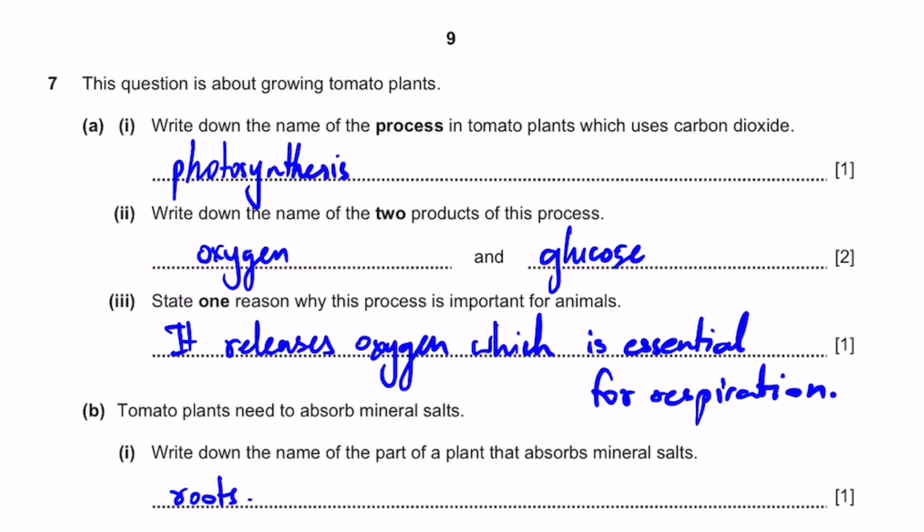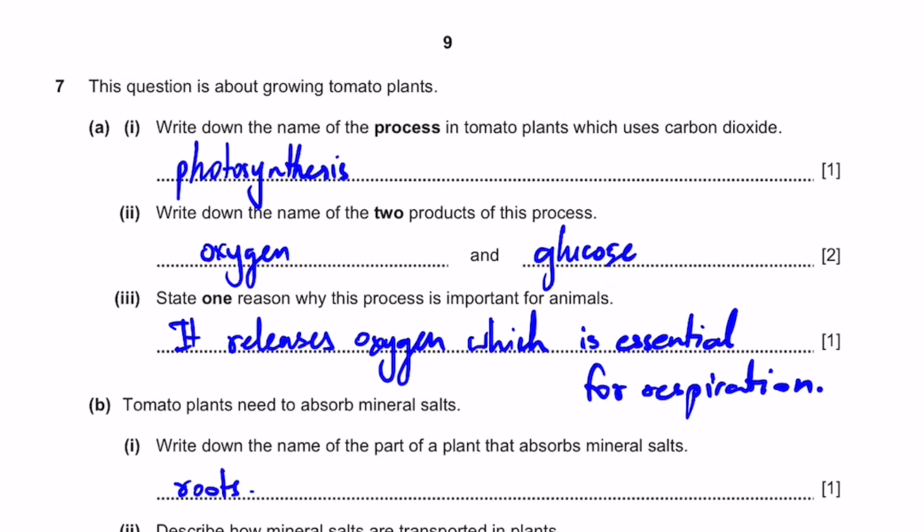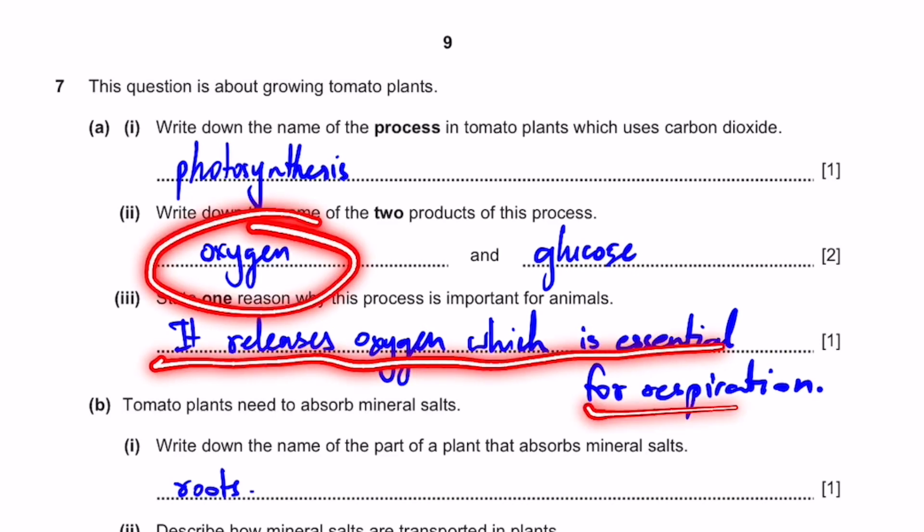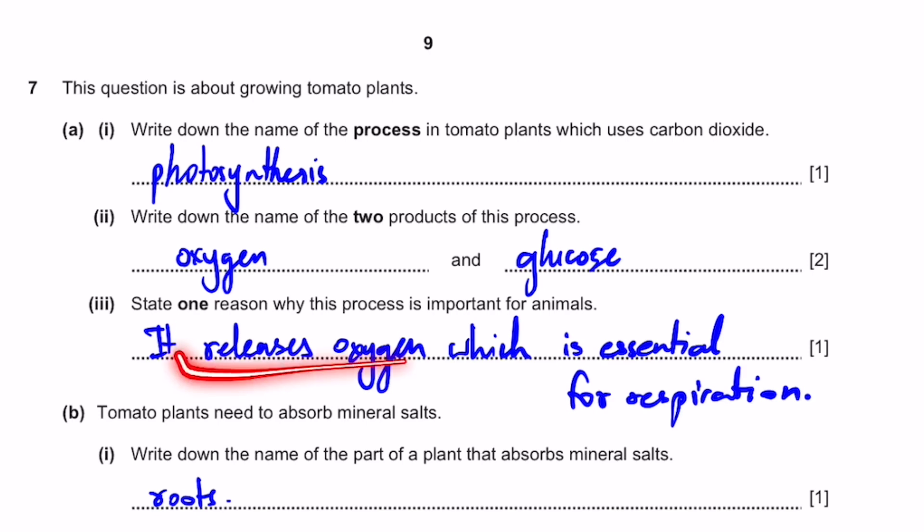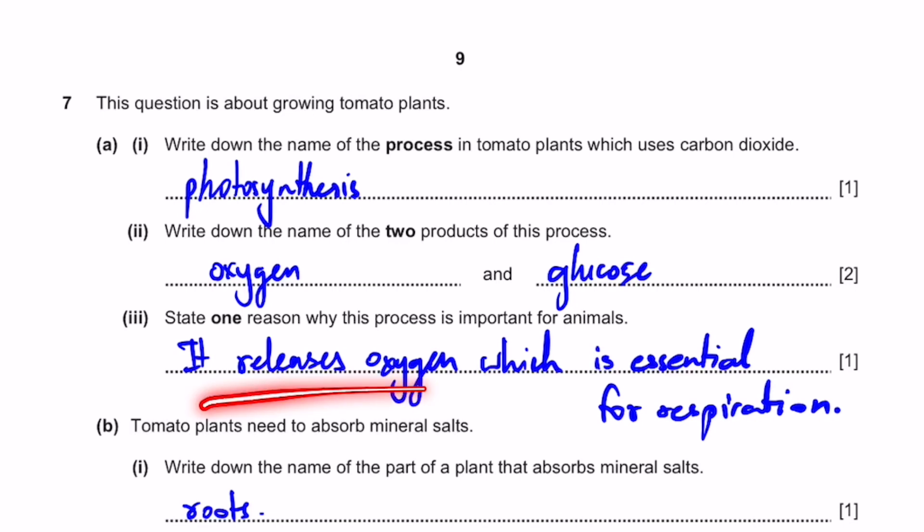State one reason why this process is important for animals. Obviously, this process, as we saw in the previous part, releases oxygen. So it releases oxygen, which is essential for respiration. Also, this is not the only answer. You can also write with respect to glucose. It provides glucose, which is essential for feeding habits of animals. Many animals eat plant food since they are producers.